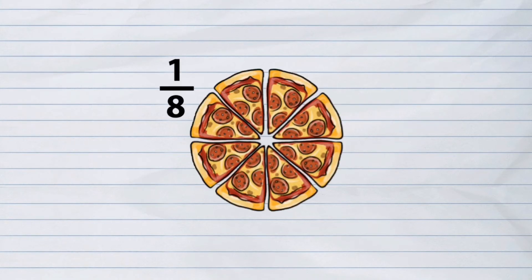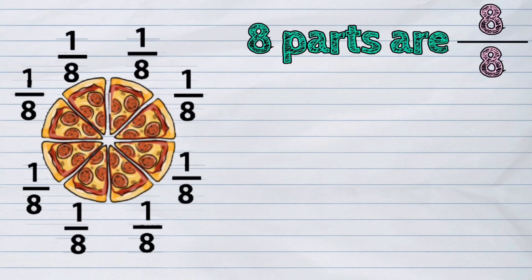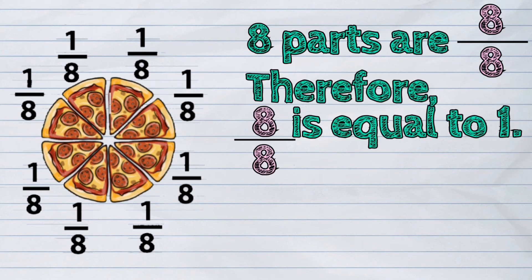So again, each part of a pizza is one-eighth. Eight parts are eight-eighths. Therefore, eight-eighths is equal to one.